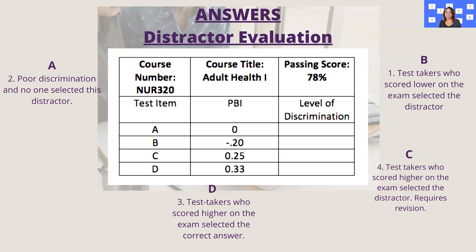How did you do? For option A, if you chose number two, you're correct — the PBI is zero, showing poor discrimination because nobody chose it. We want all distractors to be chosen by some students to indicate it was a good distractor. Since no one selected A, we would want to revise that option and choose a different one so it can distract at least a few students.